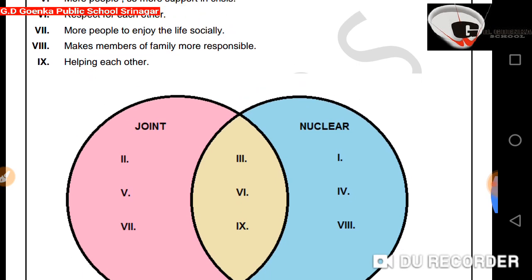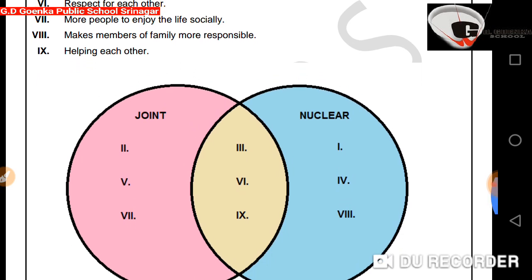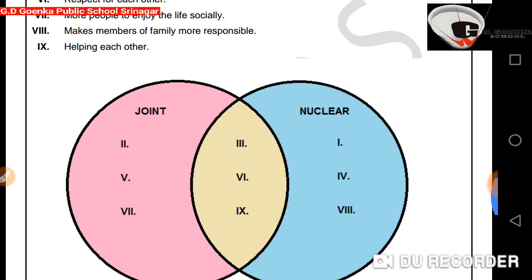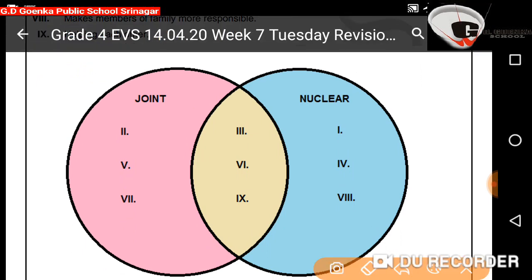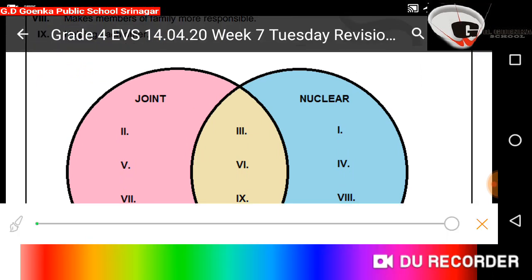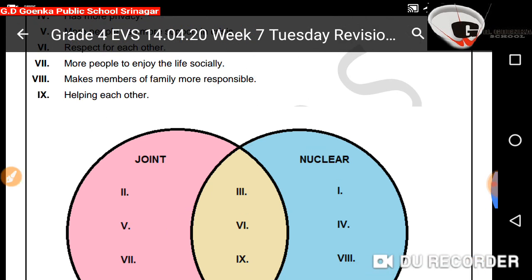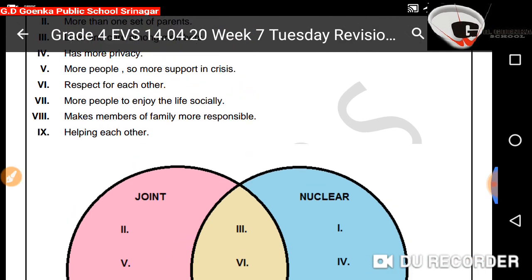The sixth point is respect for each other. This is common to both families, so it will go into the middle portion. The seventh point is more people to enjoy life socially — this will go into the joint circle, because joint family has more number of people.